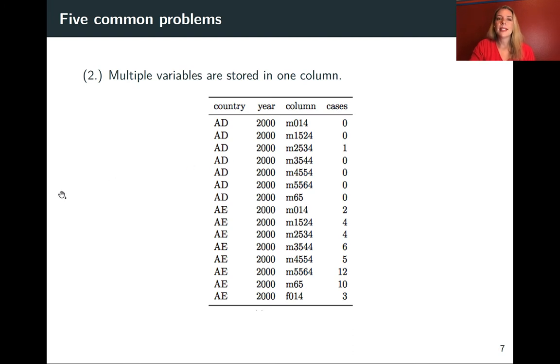The next problem is that multiple variables are stored in a single column. So this is an example where we again have data by country and then by year, and we have some kind of cases. This might be for some epidemiological study. Here in this middle column that's named column right now, you have some information that if you look at the data dictionary, this actually is giving both the sex, male or female, and then also an age category. So this first one is for males zero to 14, the next for males 15 to 24 and so on, and then we can see down here we get to females zero to 14.